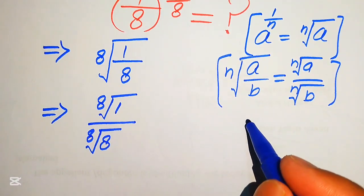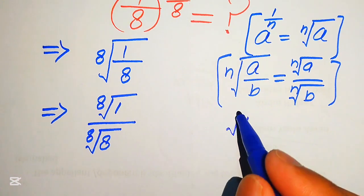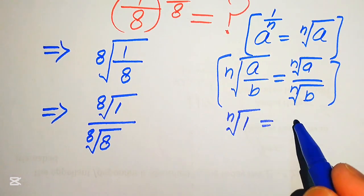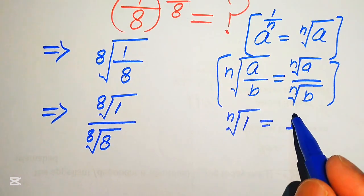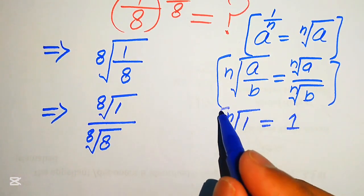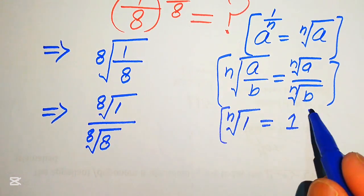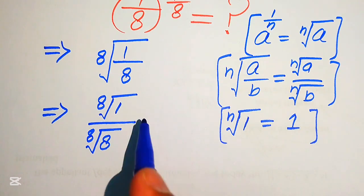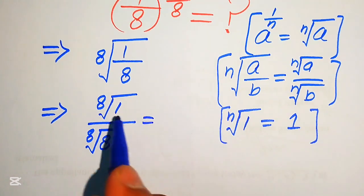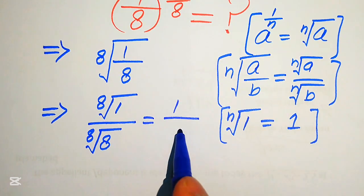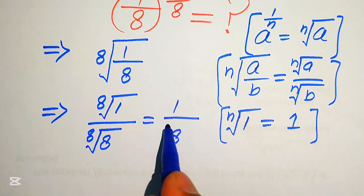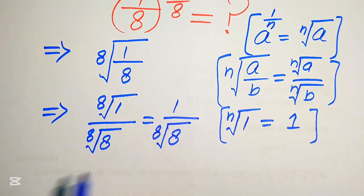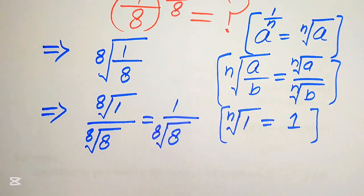We know that the nth root of 1 equals 1. This means that any root of 1 is also equal to 1. So we write this expression as 1 over the 8th root of 8.